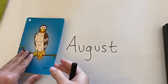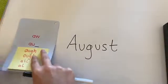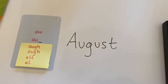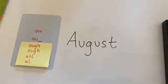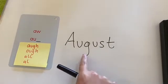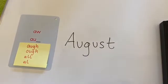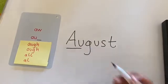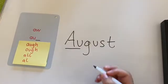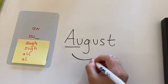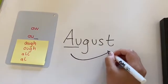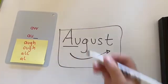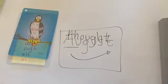Hey second grade. So we're going to flip over our card and find our spelling. I see A-U blank, and my G is going to go in that blank this time. So I know it goes aw. Slide right — August. Say it fast: August. My word is August. Super easy. Thanks, second grade.